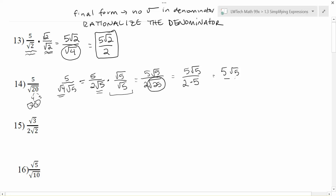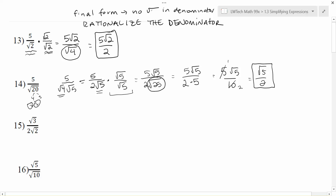This gives me 5 root 5 on top. I can do 2 times 5 on the bottom and get 10. Now notice that 5 and 10 are both outside the radical, so I can reduce that fraction by dividing top and bottom by 5, and I end up with the square root of 5 over 2. This is the most simplified form — no radicals in the denominator, all radicals are simplified, and fractions are reduced. The order you do these steps in doesn't really matter, but you always need to check along the way and take care of all of those steps.